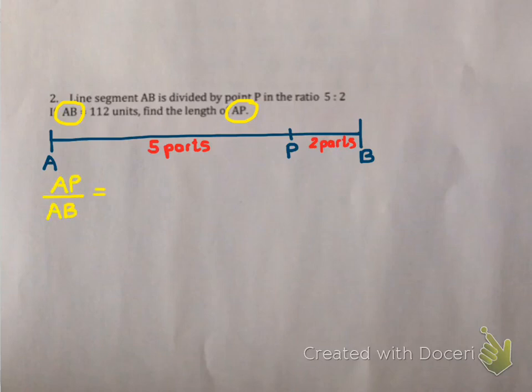So what is AP compared to AB? Now notice I've put what I want to find at the top of a fraction, simply because I find it easier to work out something at the top. Well AP is 5 parts, and AB is 7 parts. So this ratio has to simplify to 5 to 7. Now this doesn't mean it's 5 centimeters to 7 centimeters. In fact I know it's not 7 centimeters because they've told me that AB is 112 units. Which means when I simplify AP over 112, it must simplify to 5 over 7.